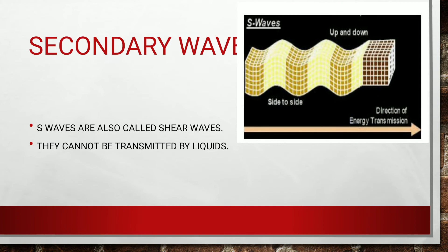Secondary waves, or shear waves, are recorded on a seismogram after the P-waves. They cannot be transmitted through liquids. They are distortional waves in which the particles vibrate at right angles to the direction of movement of the wave.